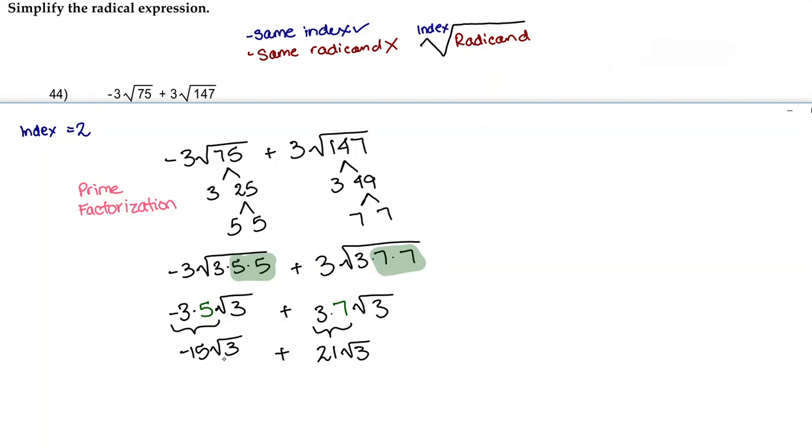Now we do have the same radicand on each of these terms, so we can go ahead and combine them. So we're going to combine negative 15 plus 21, which is 6, and then I'm just going to bring down my radical 3. So our answer, or the simplified radical expression, is 6√3.